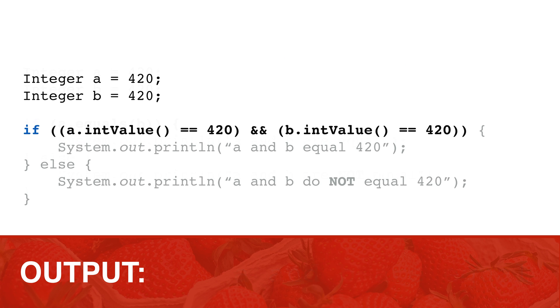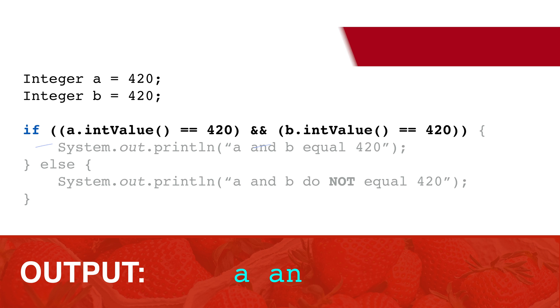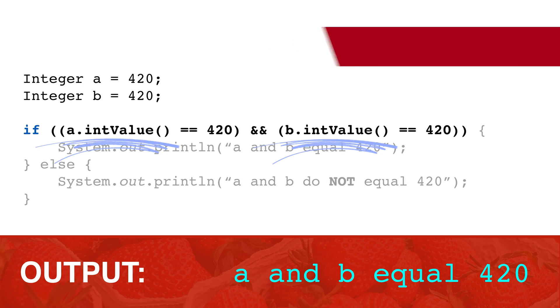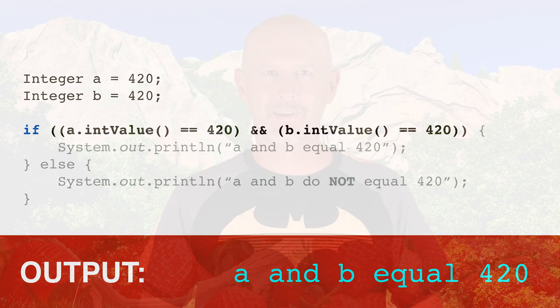If we're comparing the values of two integers, we want to get the value out using the intValue method. This returns the value as a primitive. Then we can use any of the regular arithmetic operators.